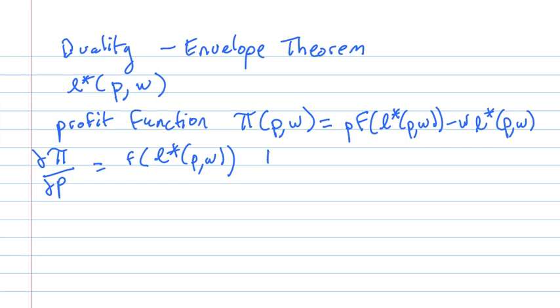And this is because the remaining terms that involve L star, remember we have the first order condition PF prime minus W equals zero. And because that's true at the optimal point the other terms drop out. And all we have left is partial pi partial P is F star.